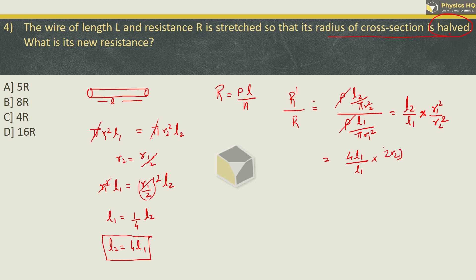Let us put the values. L2 is 4 times L1. And R1 is 2 times R2. Put it here: 2R2 whole square divided by R2 whole square. L1 cancels. R2 square also cancels. So we are left with 4 into 2 square is 4, so 16. The new resistance upon old resistance is 16. Or you can say the new resistance is 16 times the old resistance. I hope you understood. Correct option is option D.